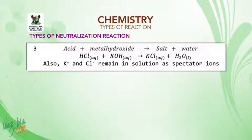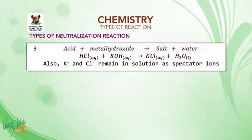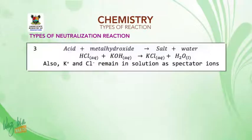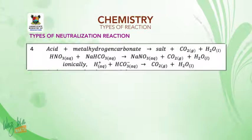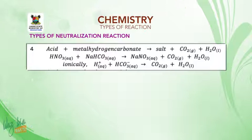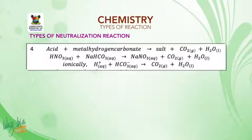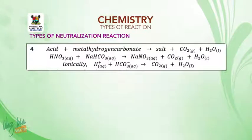Number three: acid plus metal hydroxide gives salt and water. For example, hydrochloric acid plus potassium hydroxide gives potassium chloride and water. We can also have acid and metal hydrogen carbonate giving salt, carbon dioxide, and water. For example, nitric acid plus sodium hydrogen carbonate gives sodium nitrate, carbon dioxide, and water.